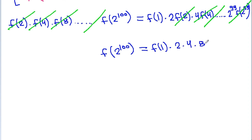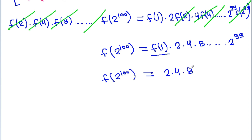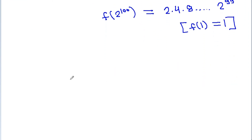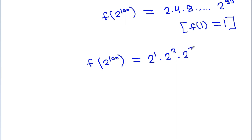So f(2^100) will be equal to 1 times 2 times 4 times 8 times up to 2^99, and since f(1) is equal to 1, f(2^100) will be equal to 2 times 4 times 8 up to 2^99, which is 2^1 times 2^2 times 2^3 times up to 2^99.